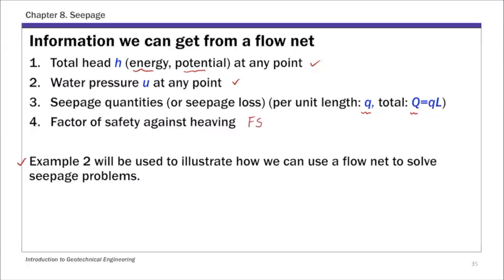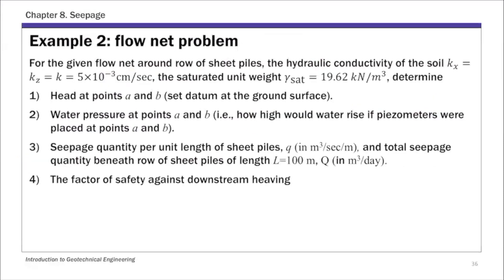I'm going to use Example 2 to illustrate how we get this information. In this example, we are given a flow net around a row of sheet piles, with hydraulic conductivity of the soil — this is an isotropic soil — 5 times 10 to the negative 3 centimeters per second. We are also given the unit weight of the soil, and we need to determine: head at points A and B, water pressure at A and B, seepage quantity small q and capital Q, and factor of safety against downstream heaving.